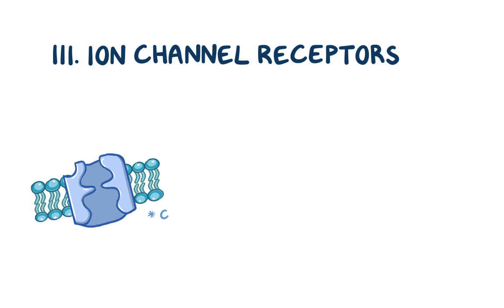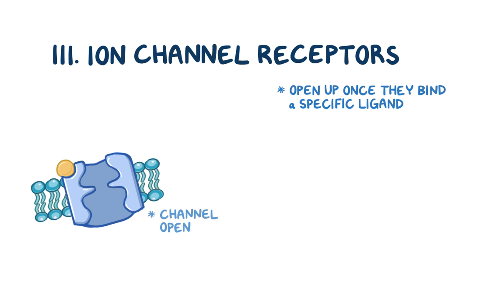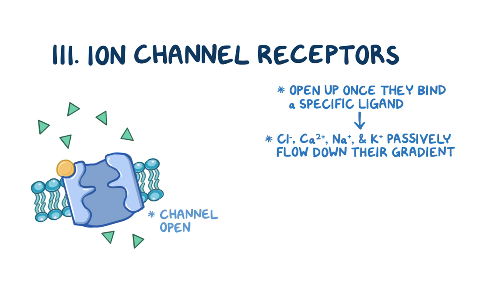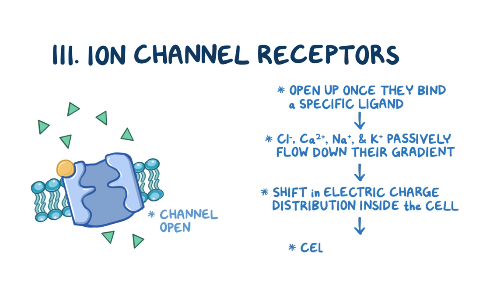Finally, there are the ion channel receptors, which are generally closed but open up once they bind a specific ligand. They allow ions like chloride, calcium, sodium, and potassium to passively flow down their gradient. This leads to a shift in electric charge distribution inside the cell, triggering a cellular response.